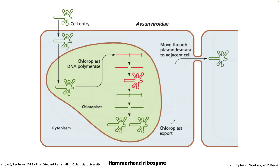The Avsunviroidae group uses a hammerhead ribozyme and goes into the chloroplast. In the chloroplast, it's copied by chloroplast DNA polymerase, making concatemers — that's strange because this is RNA, breaking all the rules. It's then cleaved by its ribozyme activity and self-cleaves into units, which fold into a highly structured form. The copy is the opposite strand, so it has to be copied again to make the genome polarity and move to the next cell. Polarity is only relevant in terms of reproduction here since there's no protein translated.